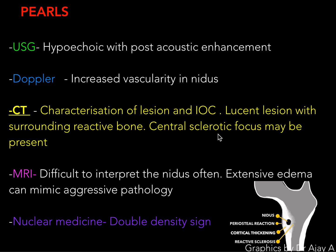The most important investigation of choice for evaluation of osteoid osteoma is CT — not MRI. CT scan provides very good depiction of the nidus and can demonstrate it even if it is very small. MRI may not detect the nidus reliably, and another pitfall on MRI is that the extensive edema surrounding the lesion can mimic an aggressive pathology. So keep in mind: CT is the investigation of choice. And in nuclear medicine, on bone scan, the classic sign of osteoid osteoma is the double density sign.